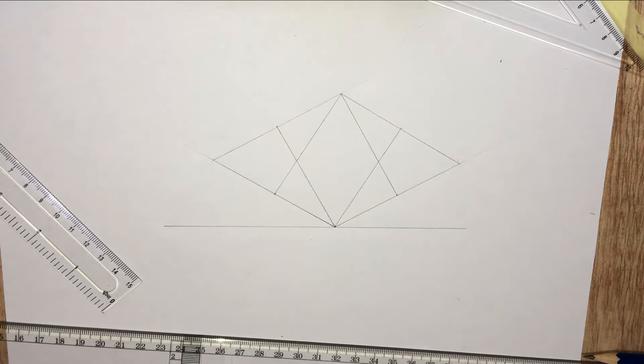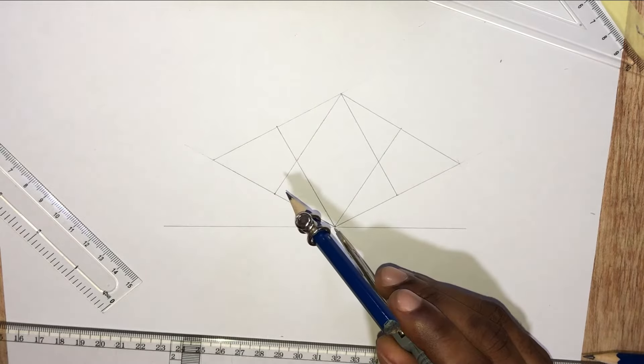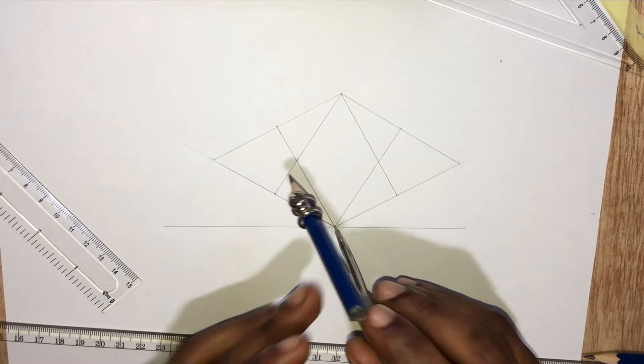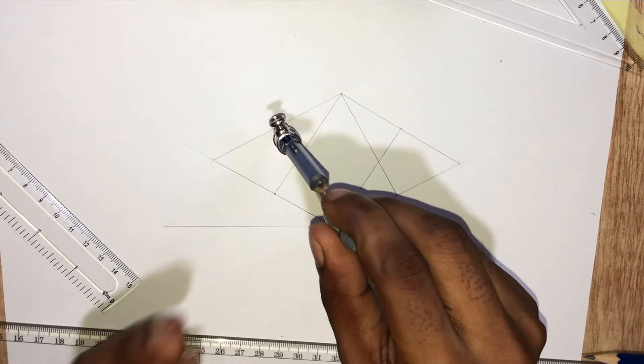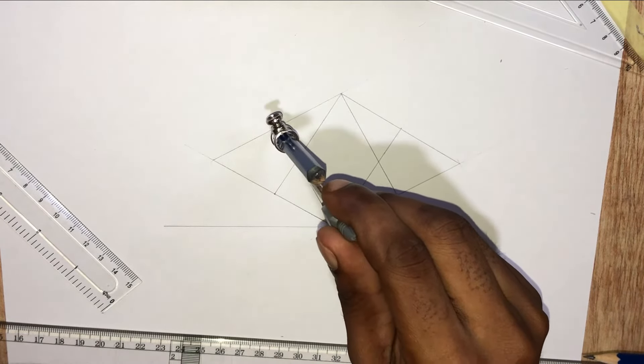Now we are ready to draw our ellipse. Turn at this point, open to this mark here, turn at this side and draw an arc.